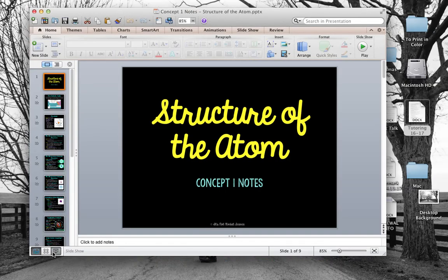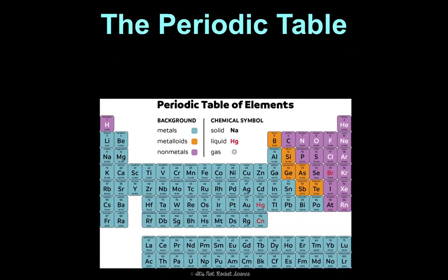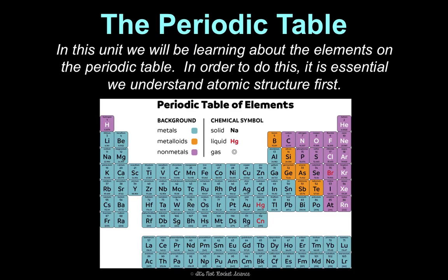Unit 7 on atomic structure, and we are going to be starting with concept 1 notes on the structure of the atom. A lot of this unit is going to be about the periodic table, but in order to understand the periodic table, we have to understand atomic structure, because both of these go hand in hand.